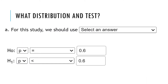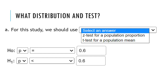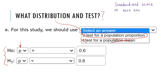For this study, what's our distribution? We're testing population proportion, so we use z. That's because the standardized score for the test statistic is z equals p-hat minus mu sub p-hat divided by sigma sub p-hat — which comes from the central limit theorem. This is definitely something to put on your note card.